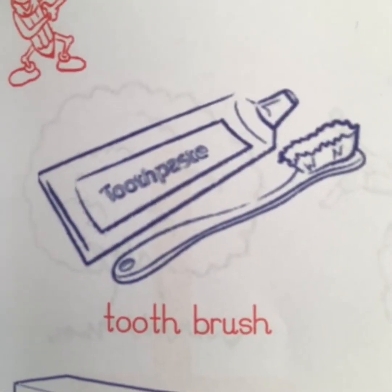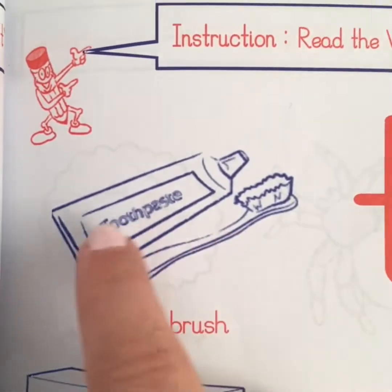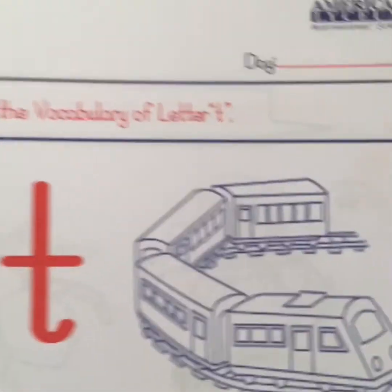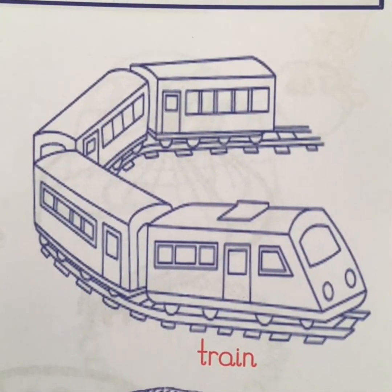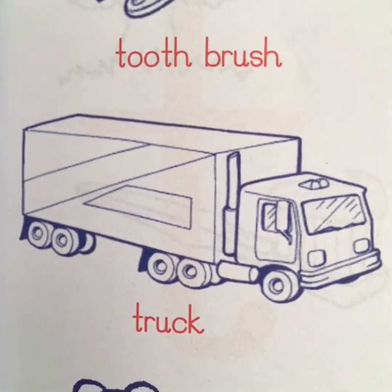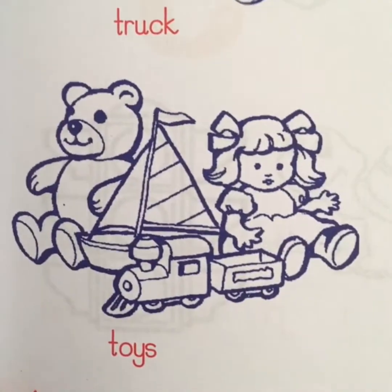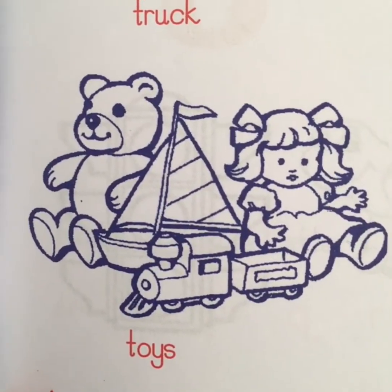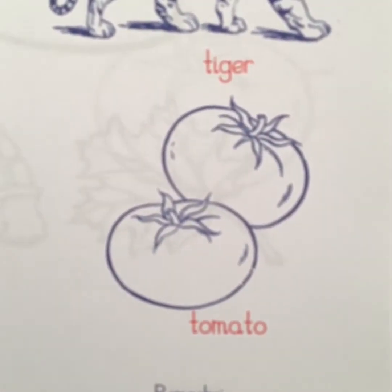Toothbrush. You see a toothbrush and a toothpaste. Train. Truck. Tiger. Toys. Tomato.